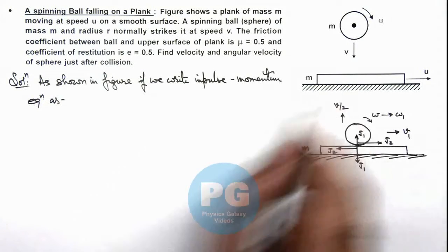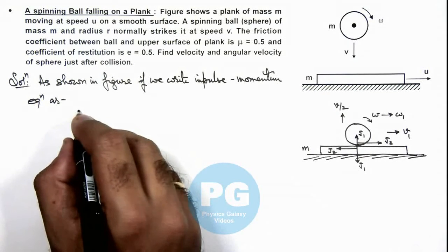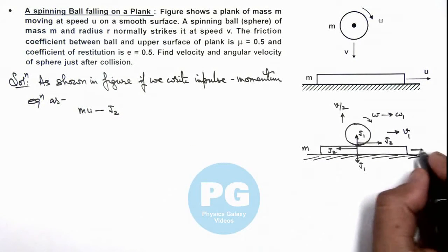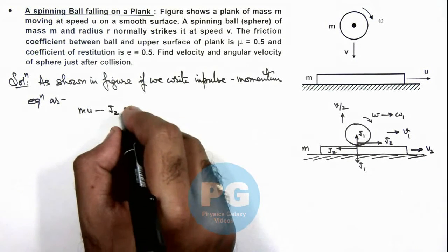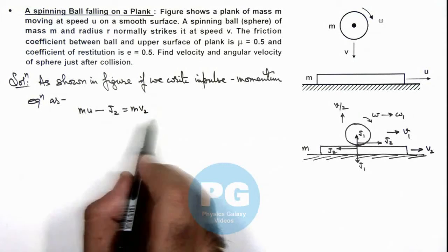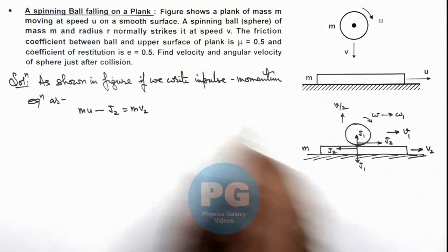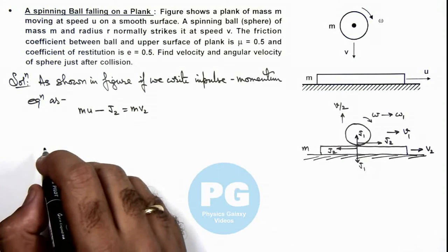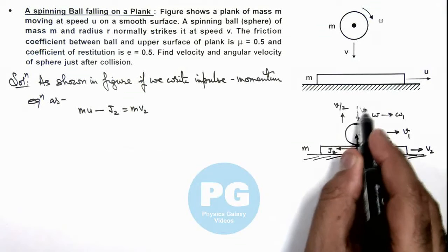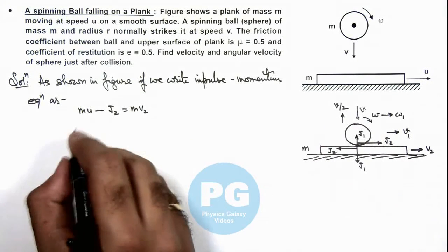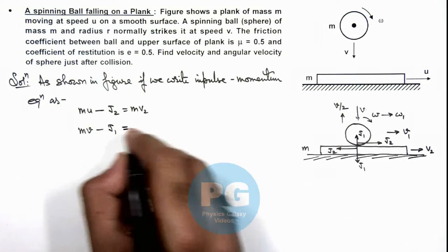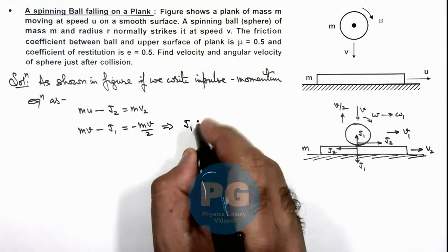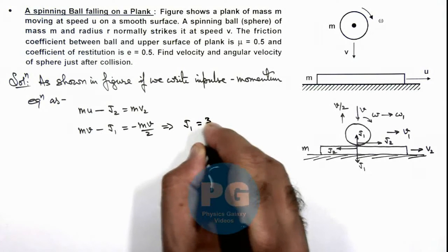Writing the impulse-momentum equation for the sphere: the ball was coming down with velocity v and rebounding with velocity v/2. So we write: mv - J1 = m(v/2), which gives J1 = 3mv/2. We note the plank equation (mu - J2 = mv2) but are not interested in it since we need the sphere's motion only.